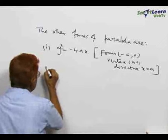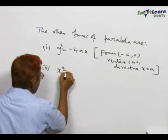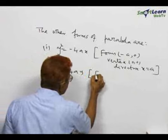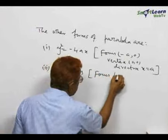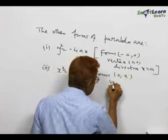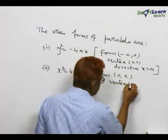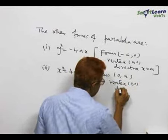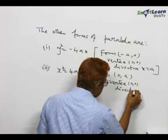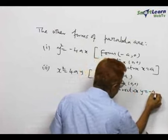(2) x square equal to 4ay, focus (0,-A), vertex (0,0), directrix y = -A.